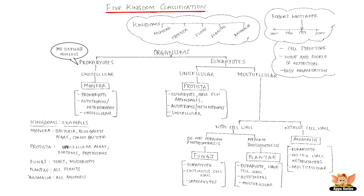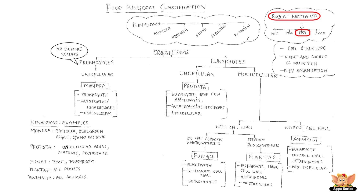Five Kingdom Classification. As we have learnt earlier, the highest level in the hierarchical classification of living organisms are kingdoms. Based on cell structure, mode and source of nutrition, and body organization, biologist Robert Whittaker in 1959 classified living organisms into five kingdoms.